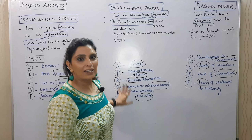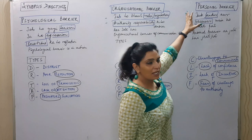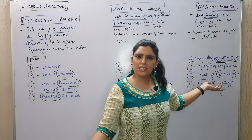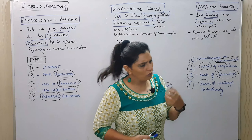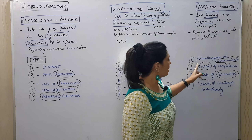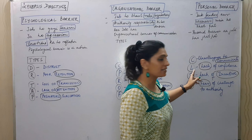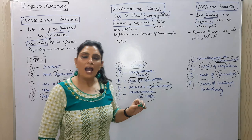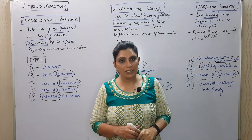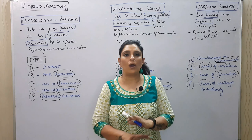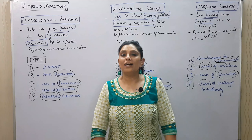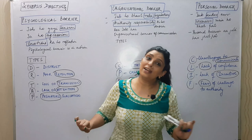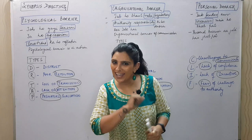Personal barrier arises when the sender or receiver is cut off from communication. The acronym covers: unwillingness to communicate, L for Lack of confidence, L for Lack of incentive, I for fear of challenge to authority. I hope all barriers are clear. We are not covering measures to overcome barriers here. I hope you enjoyed this lengthy synopsis — now it's bye-bye, see you in the next chapter.